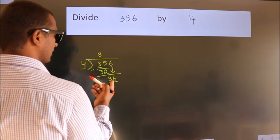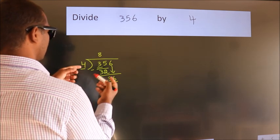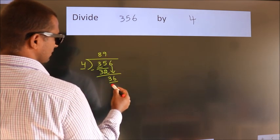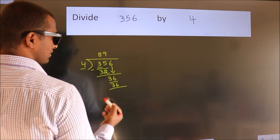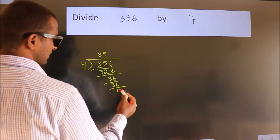When do we get 36 in the 4 table? 4 times 9 equals 36. Now we subtract and get 0.